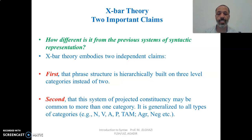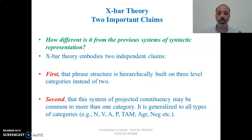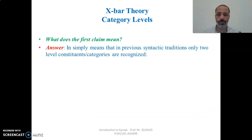The second claim is that this system of projected constituency may be common to more than one category. It is generalized to all types of categories, whether they are nouns, verbs, adjectives, or prepositions — and sometimes even inflectional categories like tense, aspect, mood, agreement, negative particles, and so on.